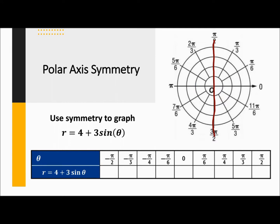So let's go ahead and plug these points in. At −π/2, I get 1. This is 1.4. This is 1.9. This is 2.5. This is 4. Then 5.5, 6.1, 6.6, and 7.